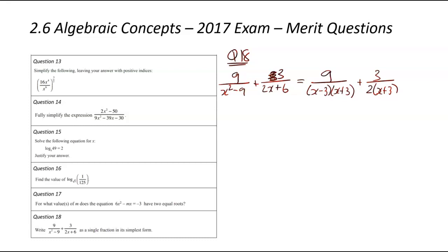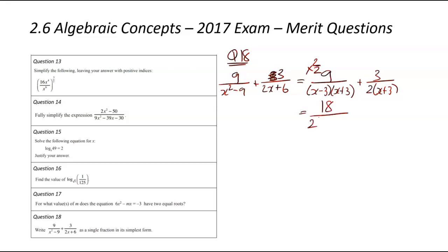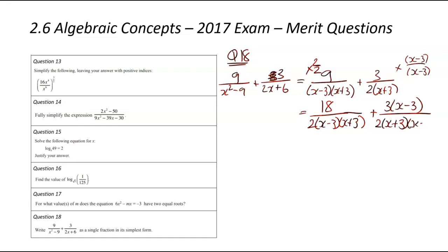I'm going to do a bit of trickery — I'll try to change the denominators so they are the same rather than use the crisscross smiley face method which would get messy. This one has a 2 in it, this one doesn't, so I'm going to multiply the first fraction by 2 over 2 (which is 1), giving 18 divided by 2(x minus 3)(x plus 3). The second fraction doesn't have the (x minus 3), so I multiply by (x minus 3) over (x minus 3), giving 3(x minus 3) divided by 2(x plus 3)(x minus 3). Now both denominators are exactly the same, so we can add the tops together: 18 plus 3(x minus 3).